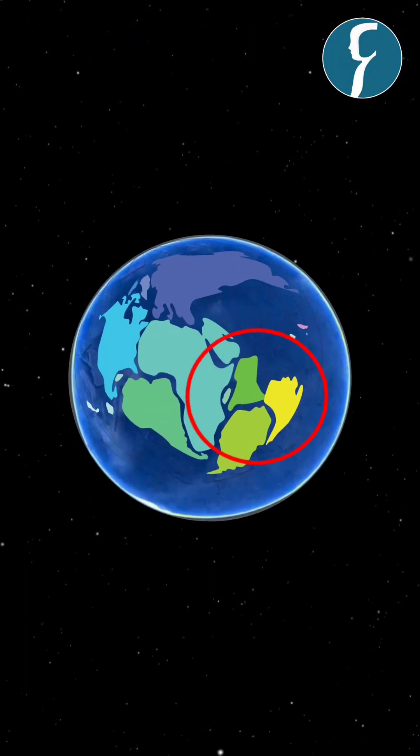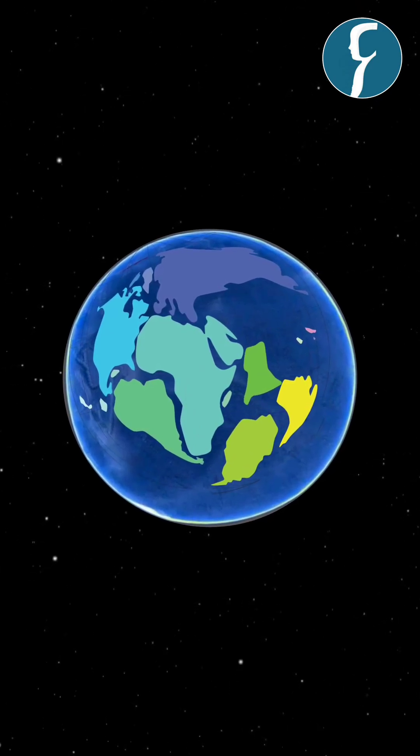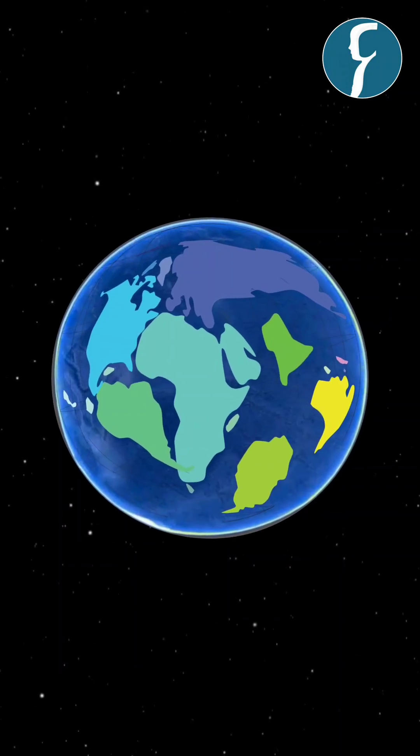Did you know that India and Australia were a common landmass and millions of years ago, they split into two and the Indian mass separated from the Australian landmass.